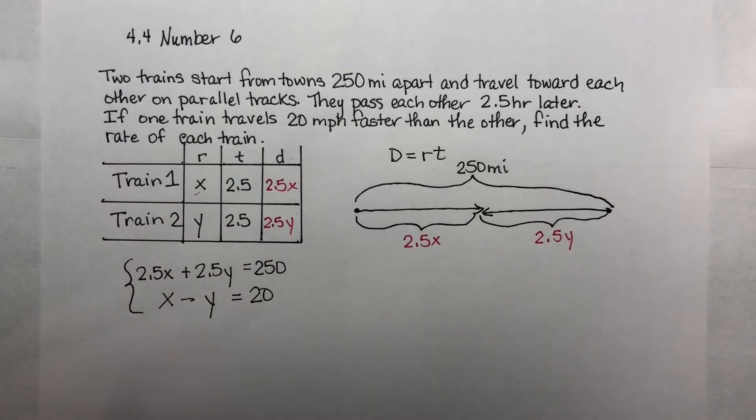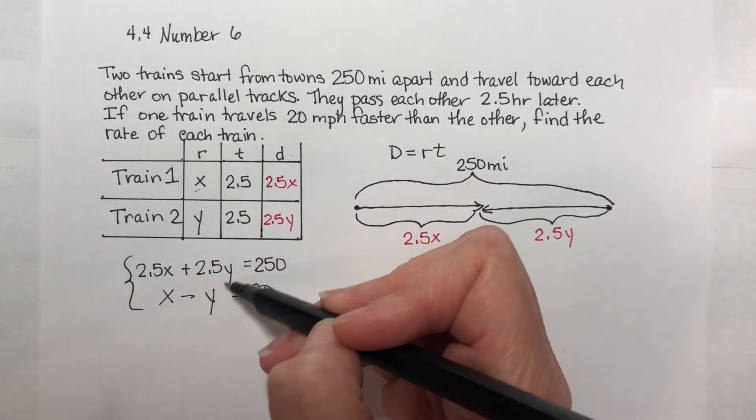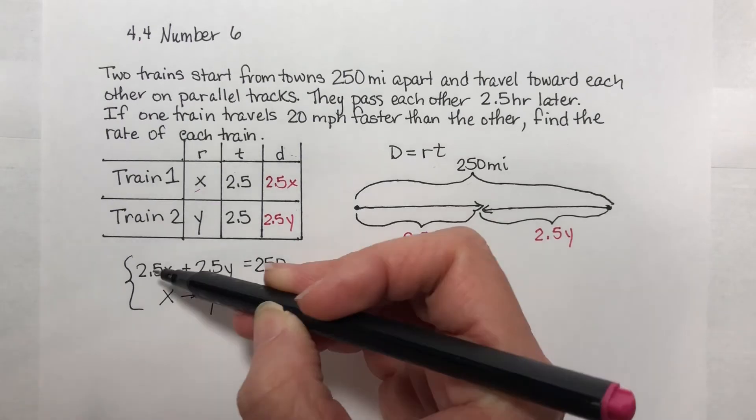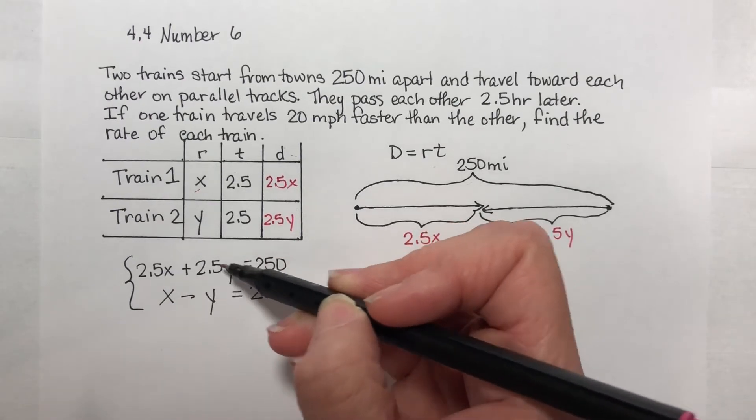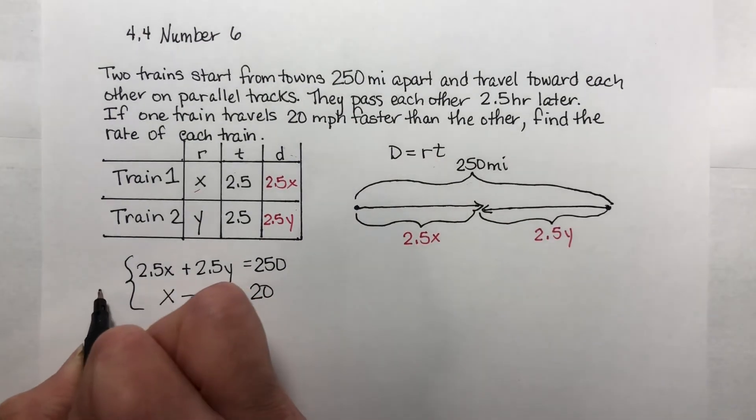If I'm going to solve this using elimination, I want one of my two variables to go away. It's going to be fairly easy for me to make my y's match with opposite signs. It wouldn't be too hard to make x match either, but this at least has opposite signs already. So if I want to cancel out of 2.5, I should multiply this whole equation by 2.5.